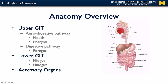That digestive pathway we conceptualize as having three parts. There's the foregut, which would be the esophagus, stomach, and first two parts of the duodenum. The midgut, which would be the second two parts of the duodenum, the remainder of the small intestines, the ascending colon, and about two-thirds of the transverse colon. And then the hindgut, which would be the remainder of the transverse colon, the descending colon, the sigmoid colon, the rectum, and the anus.